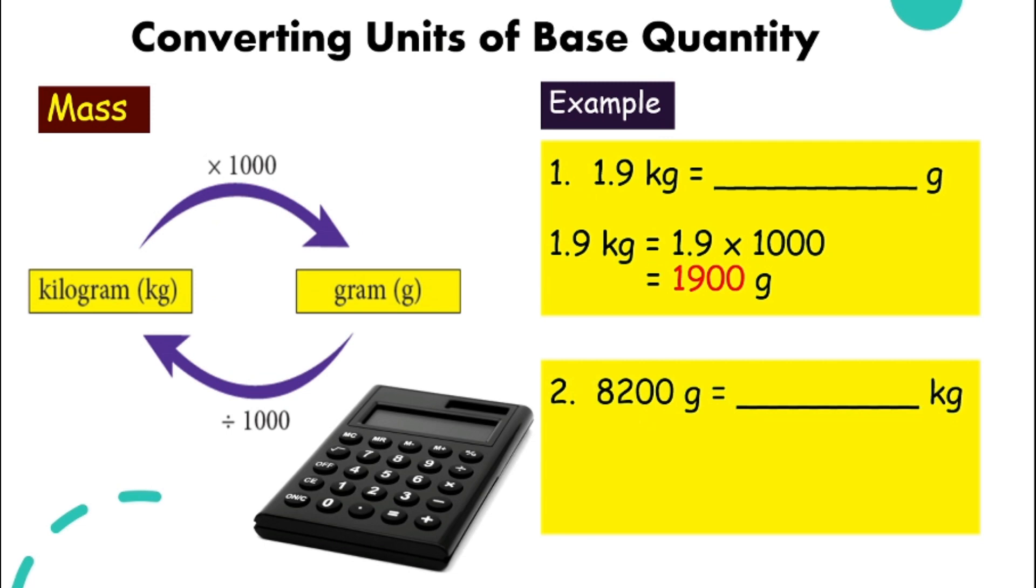How about the other way around? If we have 8200 gram, which is a very big number, we want to use the prefix K, kilogram, what do we do? So 8200 divide by 1000 if it is from the right-hand side to the left-hand side. And with the help of your calculator, you should be able to get 8.2 kilogram.